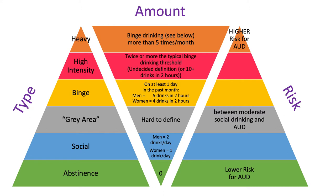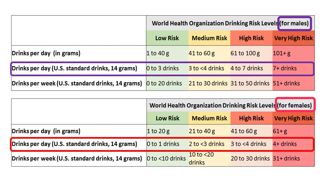Compared with people who did not binge drink, people who drank alcohol at twice the gender-specific binge drinking thresholds were 70 times more likely to have an alcohol-related emergency department visit. Those who consumed alcohol at three times the gender-specific binge thresholds were 93 times more likely to visit the ED. Gray area drinking is an informal term for the loosely defined area between social drinking and alcohol use disorder, allowing those troubled by their drinking to contemplate a drink reduction strategy or become abstinent before developing AUD.